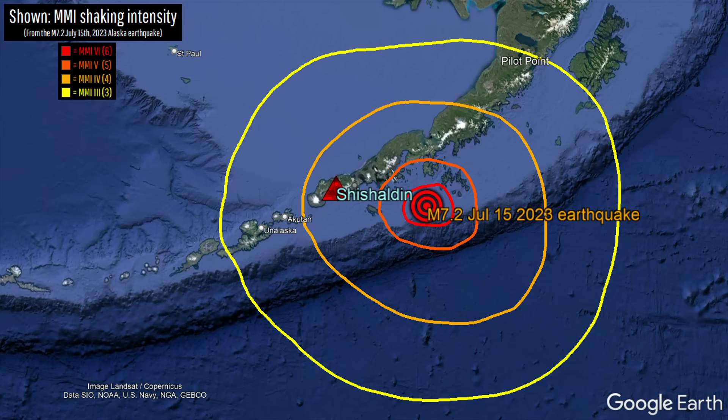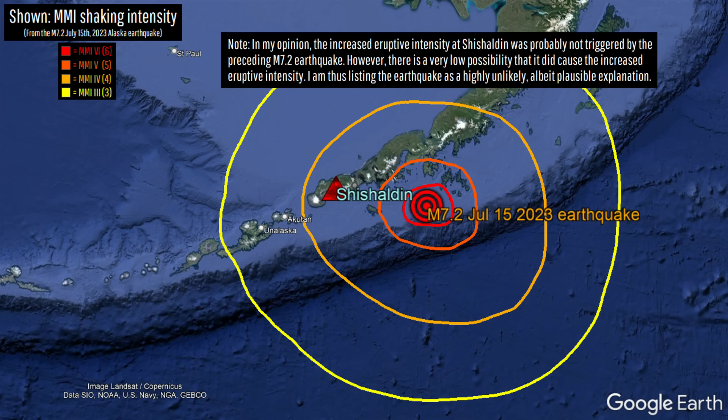At some Indonesian volcanoes, it is generally accepted that an earthquake which generates shaking of MMI 5 or higher can — while highly unlikely — trigger a volcanic eruption at a volcano already primed to erupt. Shishaldin experienced shaking equivalent to an MMI of 4, which, although a bit low, means the quake technically could have caused a temporary increase in eruptive intensity, as it is fairly close to the aforementioned threshold.